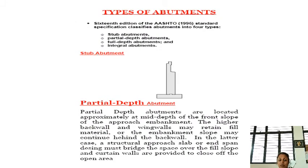There are different types of abutments: stub abutments, partial depth abutments, full depth, and integral abutments. Partial depth abutments are located approximately at mid-depth of the front slope of the approach embankment. The higher back walls and wing walls may retain the fill material, or the embankment slope may continue behind the back wall.